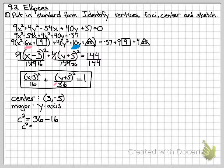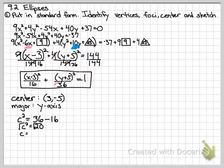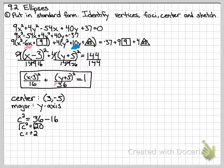So c squared is going to equal 20. Square rooting both sides, I get that c equals, you can do a factor tree on 20, or you can know that 4 divides into 20, and the square root of 4 is 2, and I would have plus or minus 2 root 5 left. So c equals plus or minus 2 root 5.